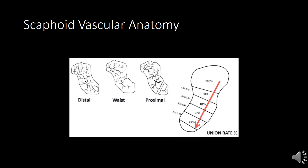This schematic shows distal, waist, and proximal fractures and their union rates. Healing reaches 100% for distal fractures and goes as low as 27% for proximal fractures.